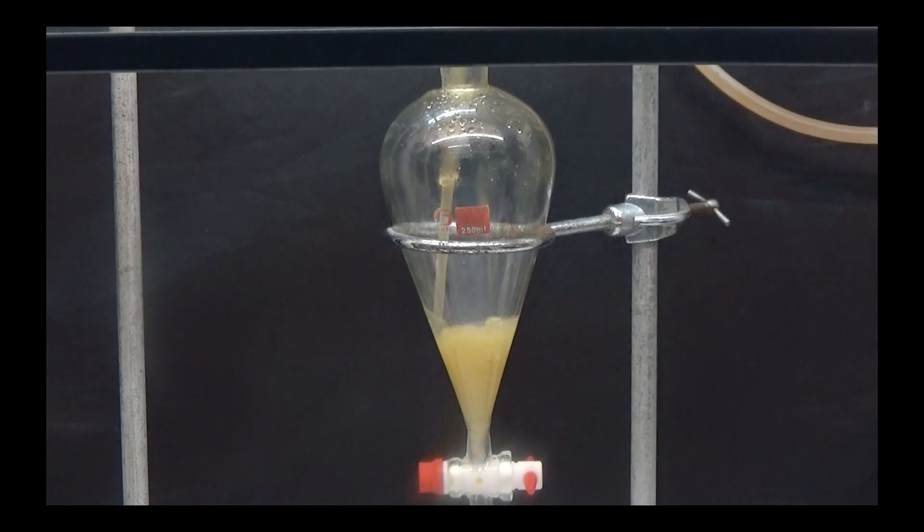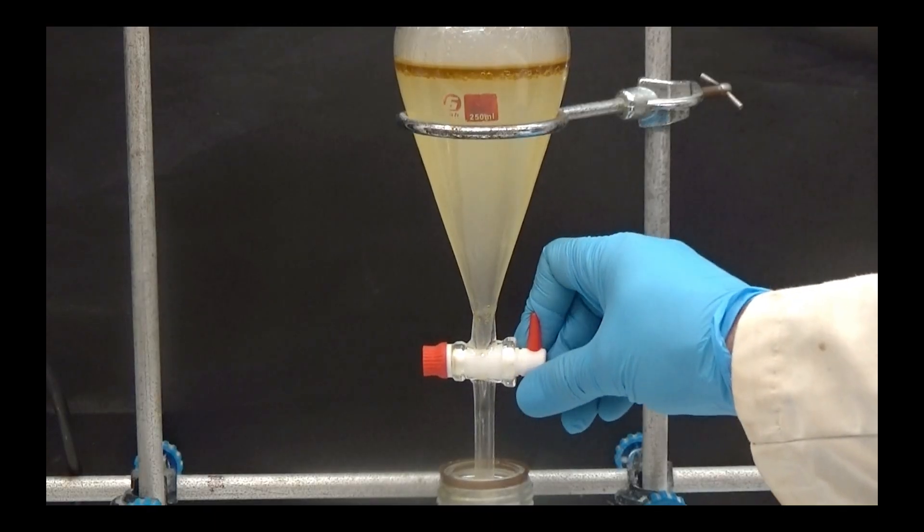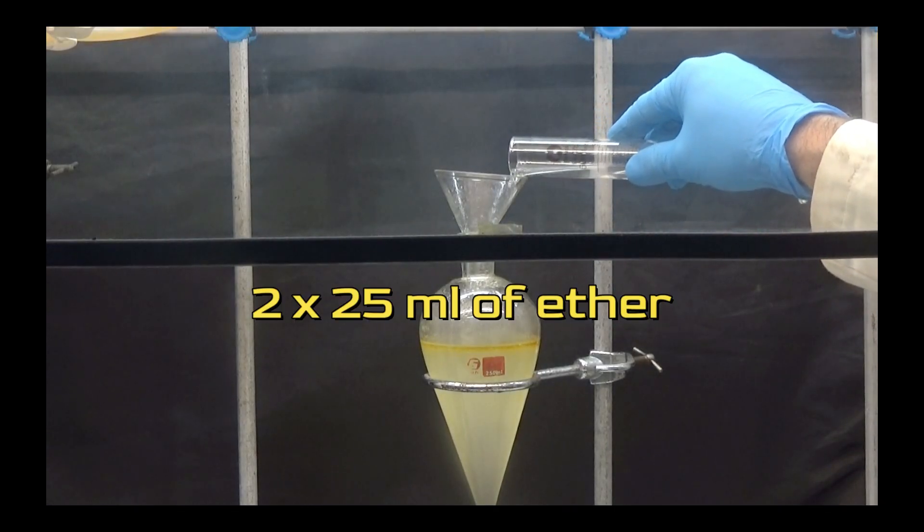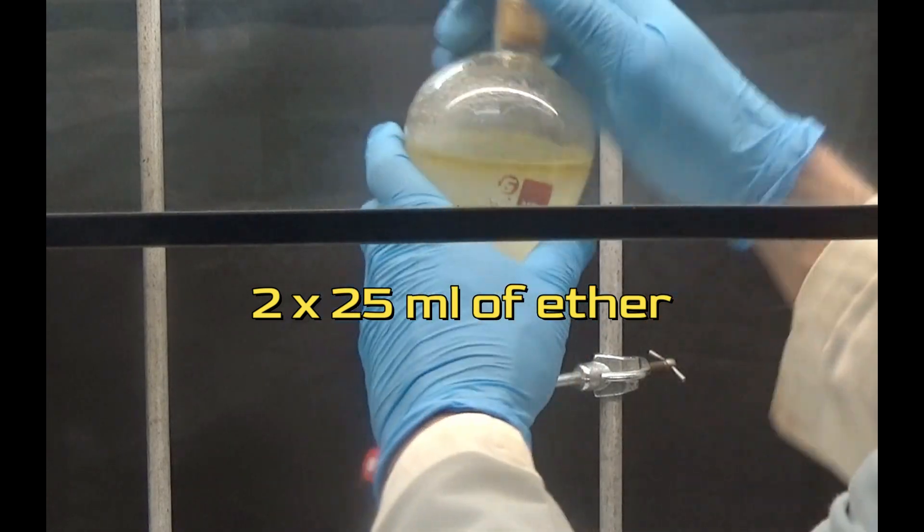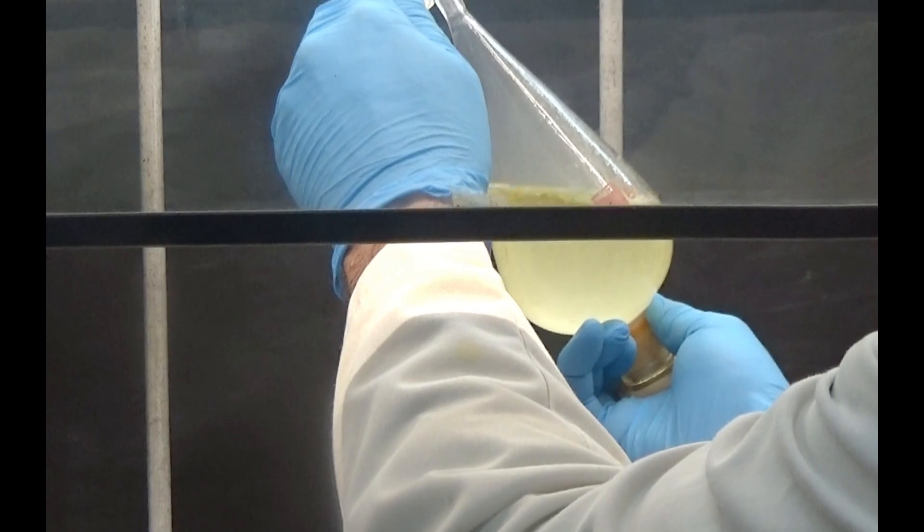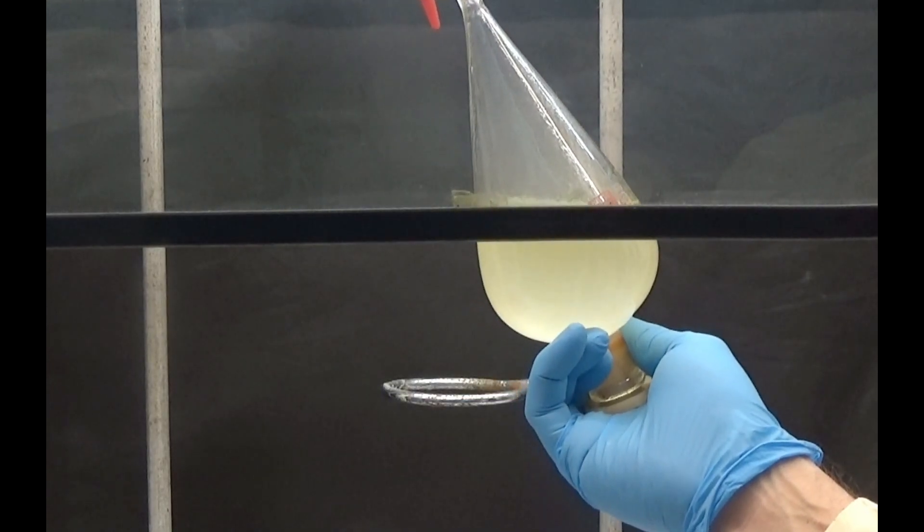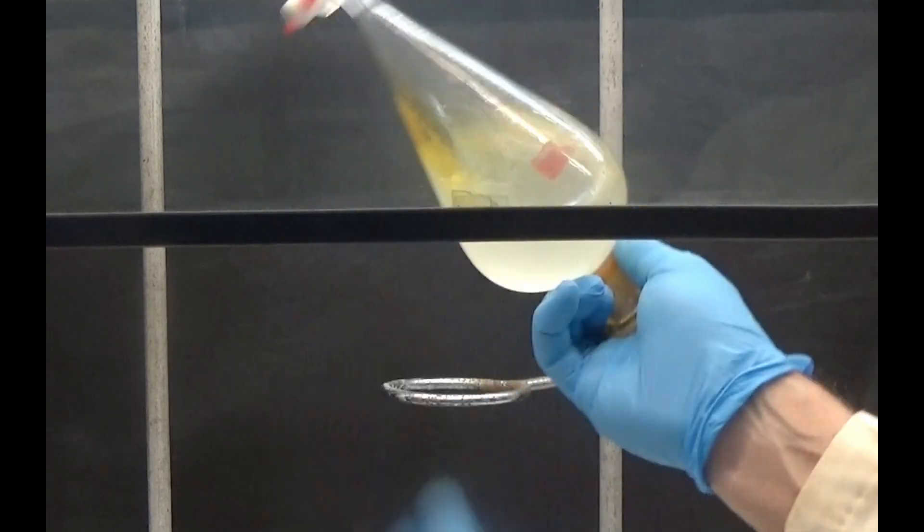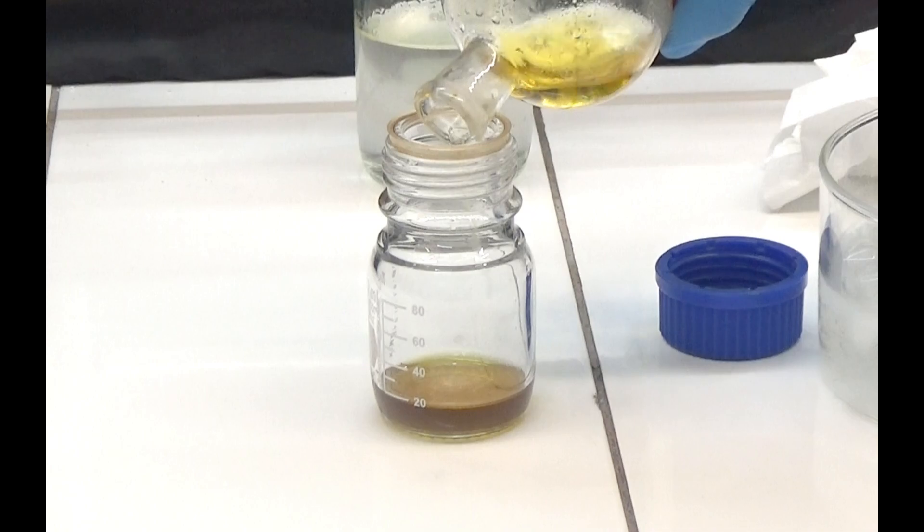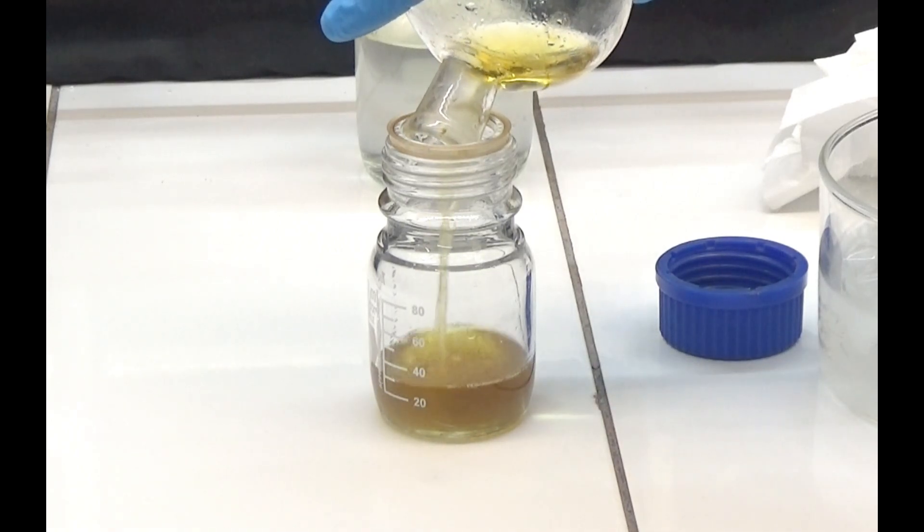Separate the aniline by using a funnel to separate the phases. We wash the aqueous phase twice with 25 milliliters of ether. We combine all the organic phases: aniline and the two ether extractions.